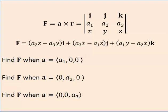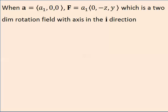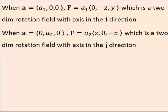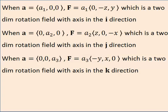Let's first think about a constant vector that is parallel to the x-axis. When A is parallel to the x-axis, the resultant vector field is a 2-dimensional rotation field with axes in the i, or the x, direction. When A is parallel to the y-axis, the rotation vector field is a 2-dimensional rotation field with axes in the j-direction. And when A is parallel to the z-axis, F is a 2-dimensional rotation field with axes in the z, or the k-direction.